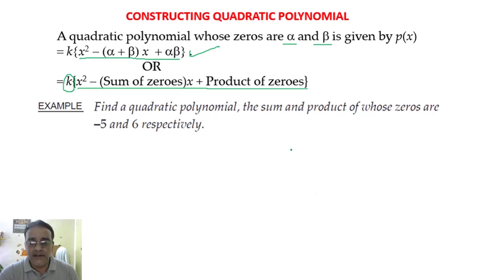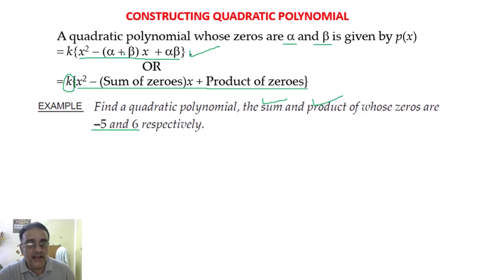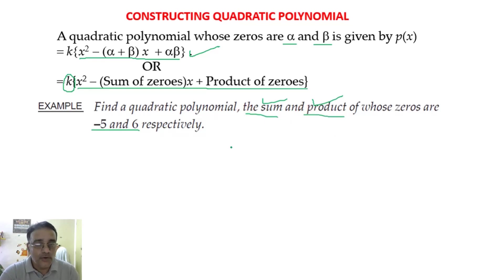Find a quadratic polynomial whose sum and product of zeros are −5 and 6. In this type of question, you have to be very careful about whether sum or product is given. If sum and product are given, directly substitute into the formula. If zeros are given, you have to find sum and product separately. So first, read the question carefully.